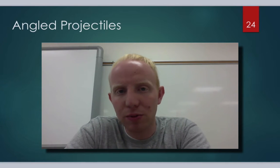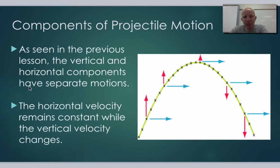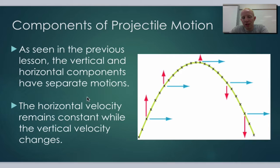When we do angled projectiles, we can treat it similar to what we did with horizontal projectiles — we treat each component of the projectile motion separately. The vertical and horizontal components have separate motions; we can think about them differently both mathematically and physically. The horizontal velocity remains constant, assuming there's no air friction, and the vertical velocity is the one that changes because of gravity.